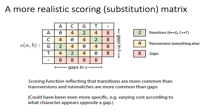Here's an example of a more realistic scoring scheme for an alignment used in real life. Larger values mean stronger penalization. For example, transitions are penalized less than transversions, reflecting their relative frequencies in genome evolution.